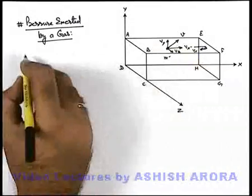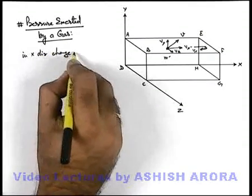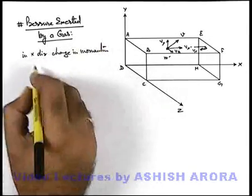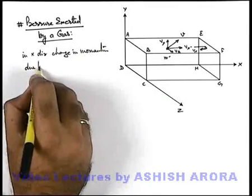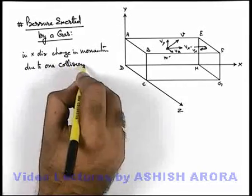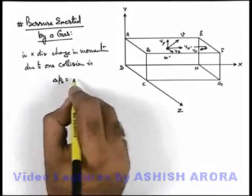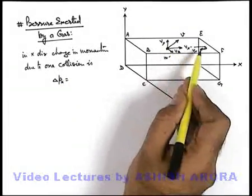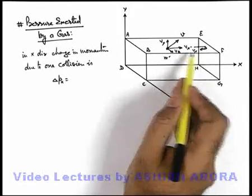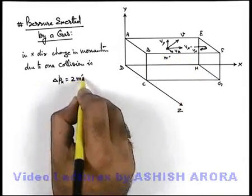In this situation we can write, in the x direction, the change in momentum due to one collision. This can be written as delta p_x. The momentum of the molecule in the x direction is m' v_x, and it will rebound with the same momentum but in the opposite direction. So the change in momentum will be 2m' v_x.